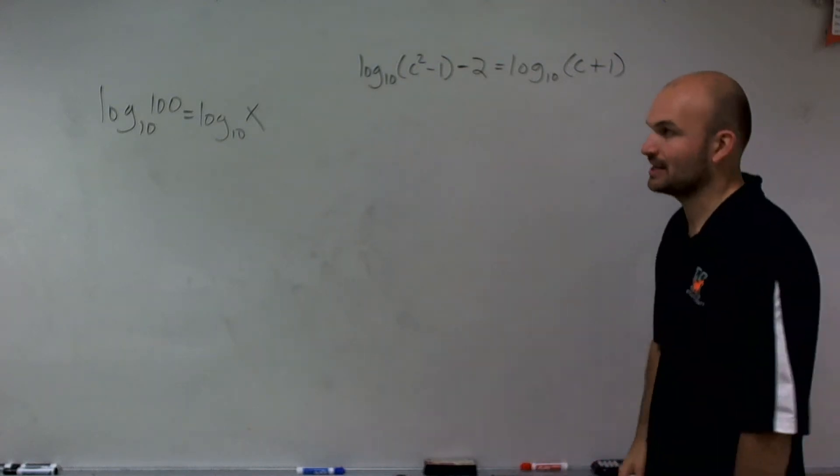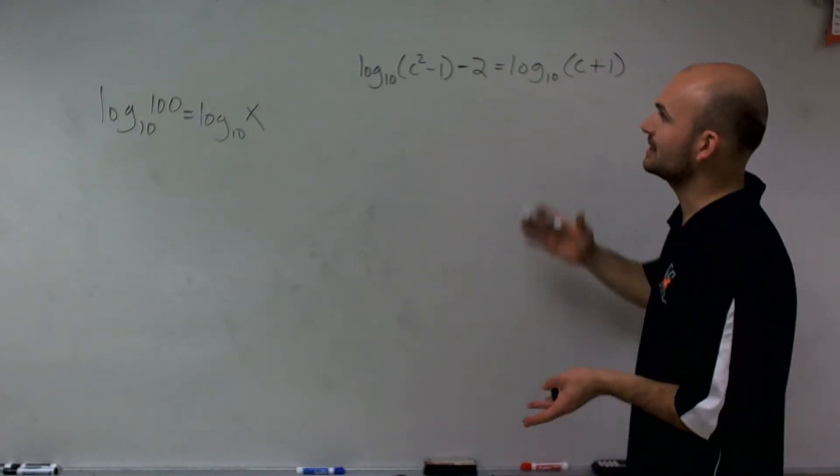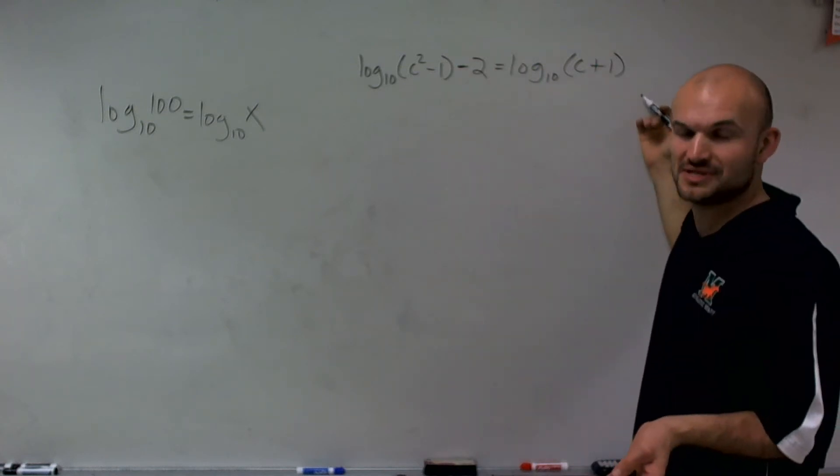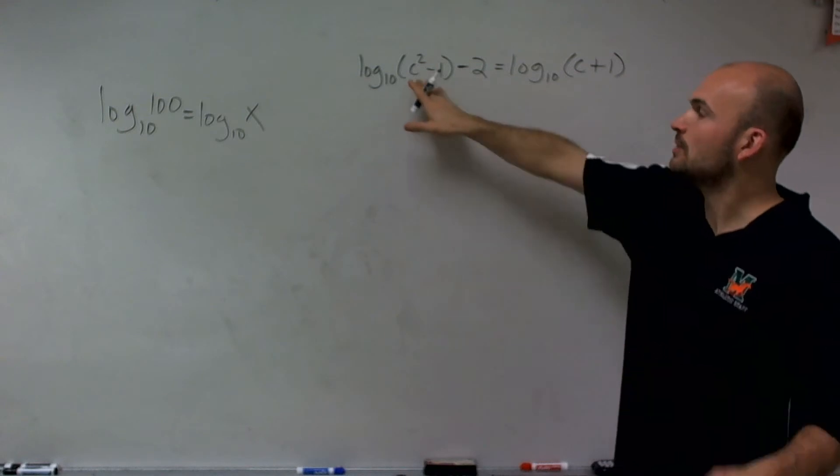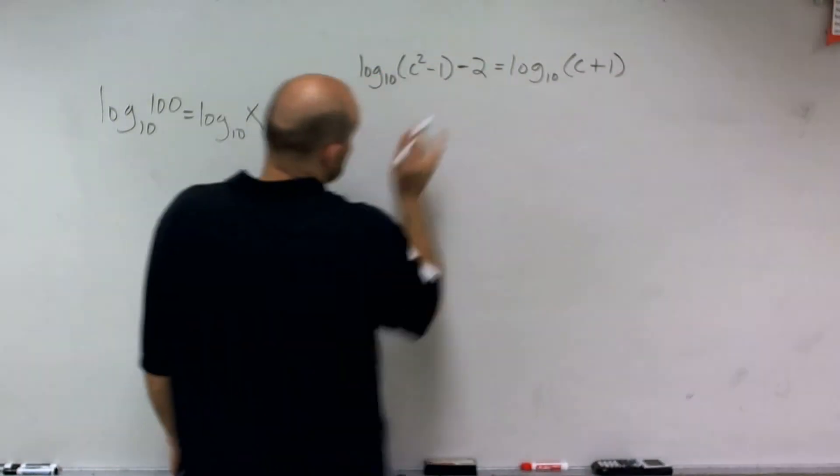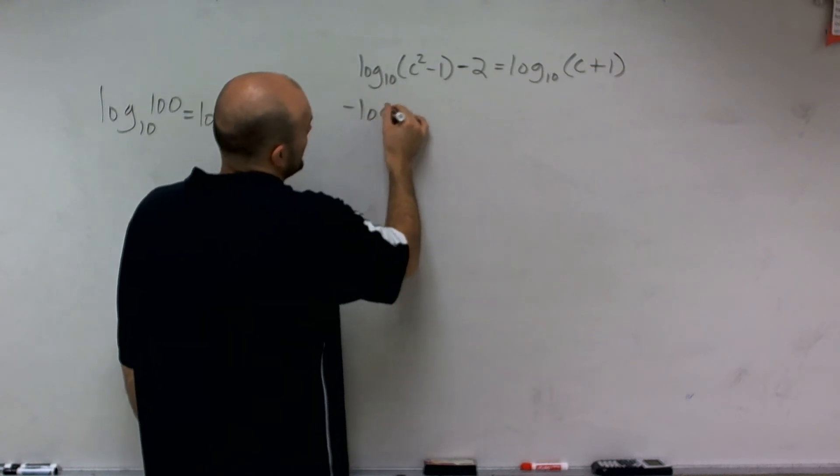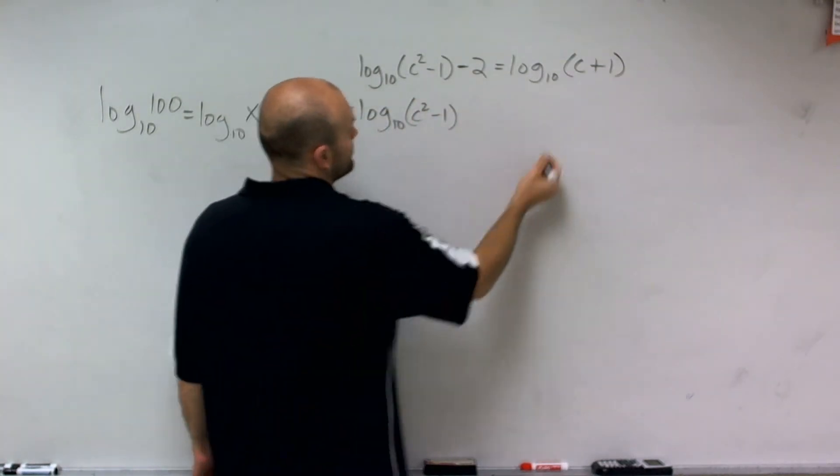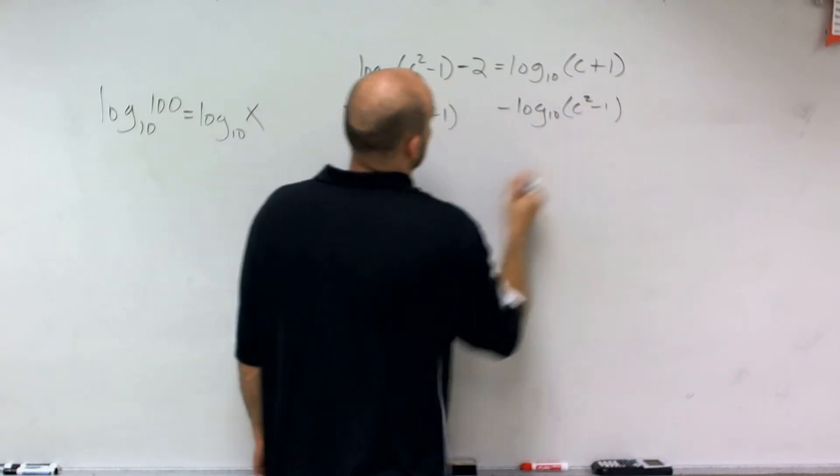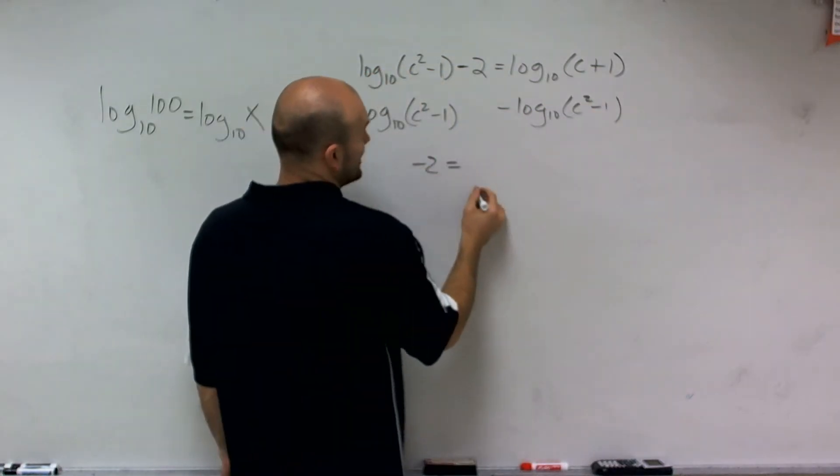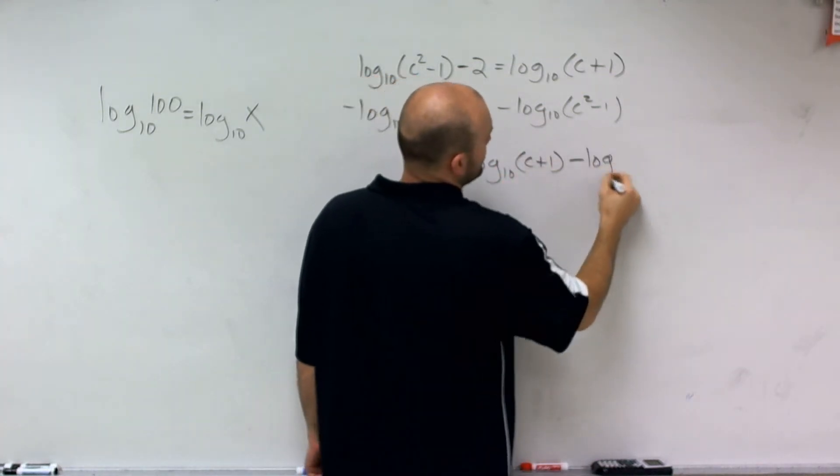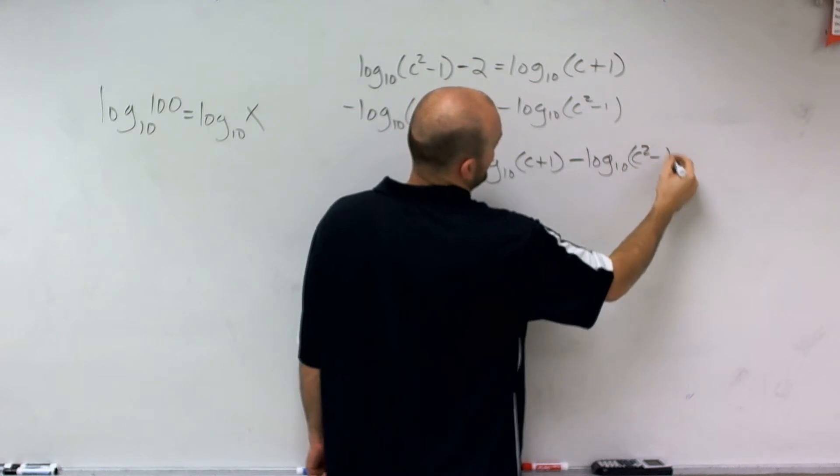So what we're going to want to do for this problem is put the logarithms on the same side. So let's isolate this negative 2, and let's subtract log base 10 of c squared minus 1. Now I'll do that on both sides. So therefore, I get negative 2 equals log base 10 of c plus 1 minus log base 10 of c squared minus 1.